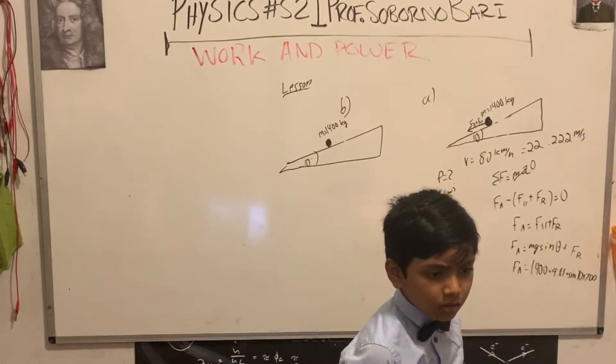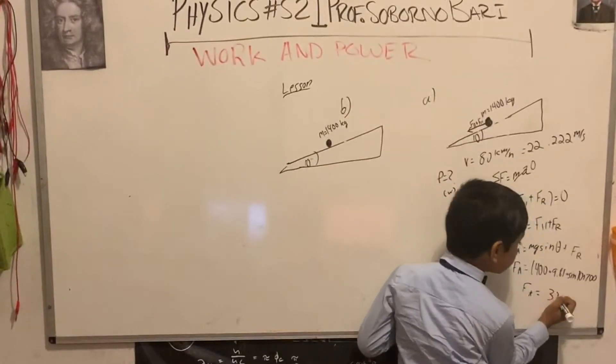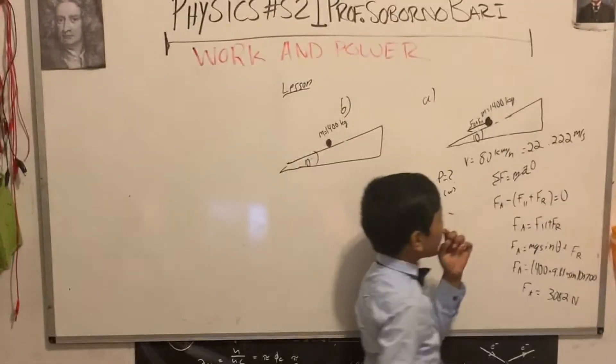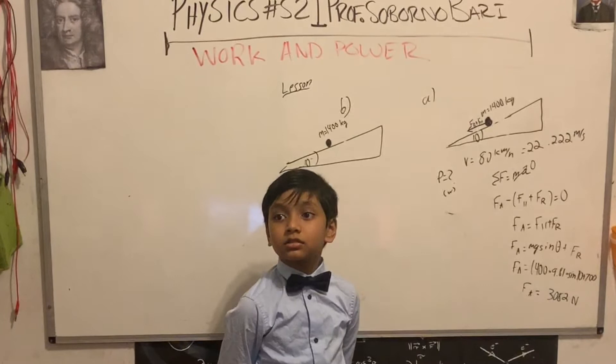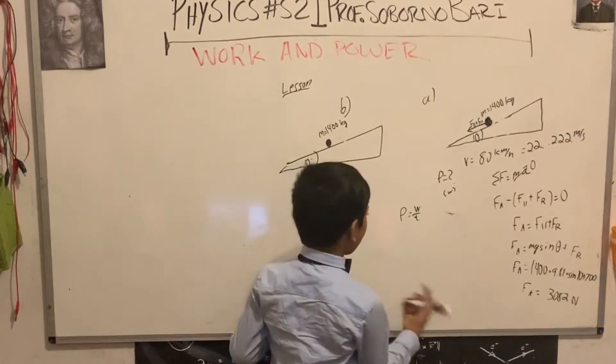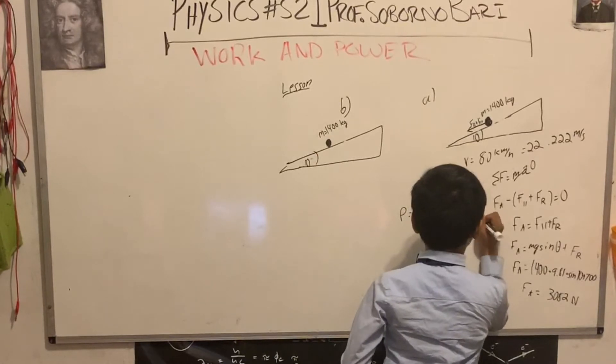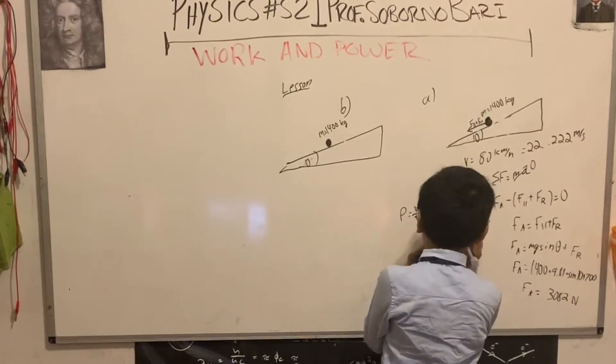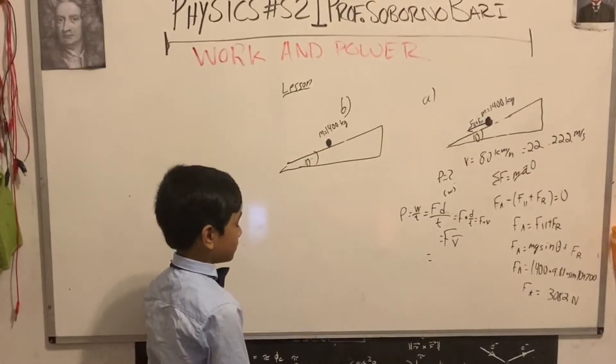Now we know that v is 22.22, but you're probably asking how do we find power? P is equal to W over t, but we don't know d, we don't know t. So you might be asking how do we solve this. We cannot, we don't have enough information. No! F times d over t, which is F times d over t. d over t condenses into v, so we actually do have all the information needed.